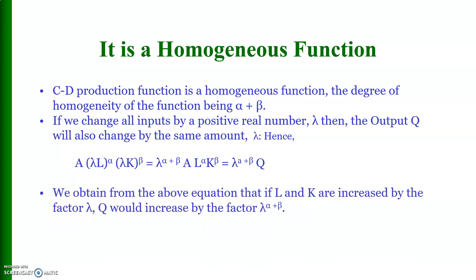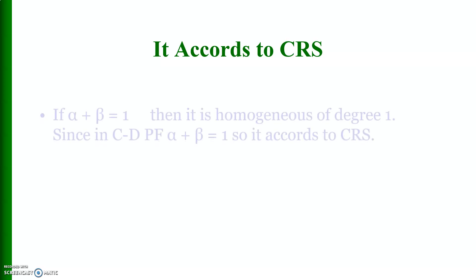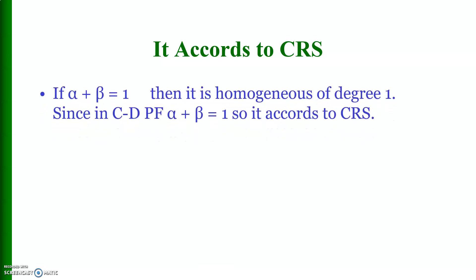We obtain from the above equation that if labor and capital are increased by the factor lambda, Q would also increase by the same factor lambda raised to the power alpha plus beta. The Cobb-Douglas production function exhibits constant returns to scale since alpha plus beta equals one. Therefore, it is homogeneous of degree one, and it corresponds to constant returns to scale.